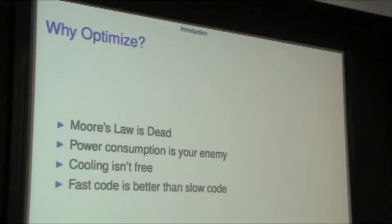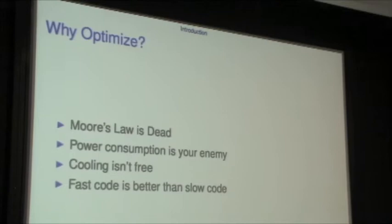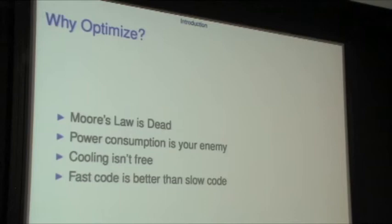Why do we care about this kind of stuff? Moore's law is dead. Your processors are not getting any faster. You're going to get a lot more little processors, but they're not going to go any faster than they are now. Power consumption is now going to be the biggest enemy of your software because power is expensive, and because the faster you run your processes, the more power you're consuming. And this is a good lesson for people who live in Japan — cooling isn't free. If you live in a hot country, you'll actually care about cooling your computers sufficiently to keep them running. And I like to think that fast code is better than slow code.